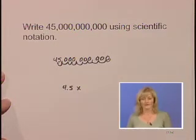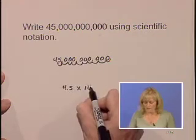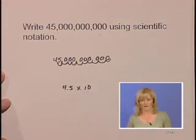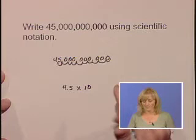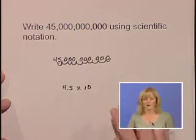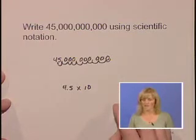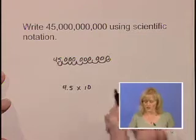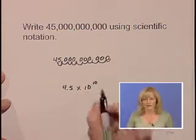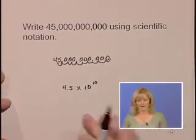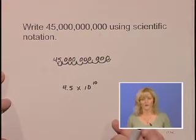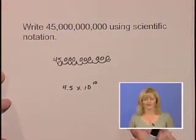To complete scientific notation, we need the factor times 10 raised to an exponent. This exponent is the number of places we've moved our decimal point. It is not just the number of zeros. So we moved 10 places, so the number in scientific notation is 4.5 times 10 to the tenth power.